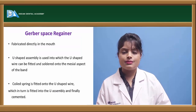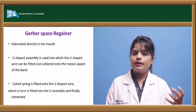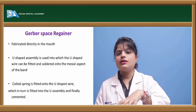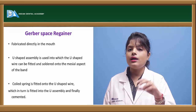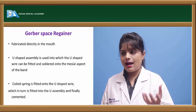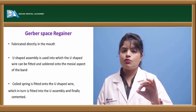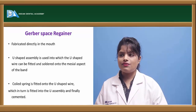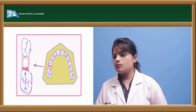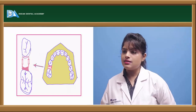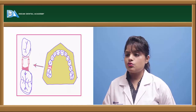Next is the Graver space regainer. It has a U-shaped assembly which is fabricated directly in the oral cavity without requiring a cast, making it a simpler, quicker method. The U-shaped assembly bands the tooth and fits to the mesial end of the band. Inside the U-shaped assembly, a U-shaped wire and coil spring provide activation. The U-shaped wire extends into the shaft, with coils placed on the first permanent molar.